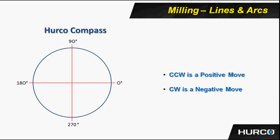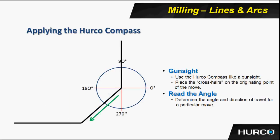When we start to program in lines and arcs, we also want to think about the HERCO compass. Zero degrees is at three o'clock and a positive move is in the counterclockwise direction. When programming lines and arcs, I think of the HERCO compass as a gun sight. If I place the crosshairs on the point I'm coming from — my origination point — the programmed line passes through the compass at some degree of angle. I can follow the line to determine the angle I need to program. In this case, it looks like about 225 degrees, or 45 degrees plus 180, which I can verify either way.